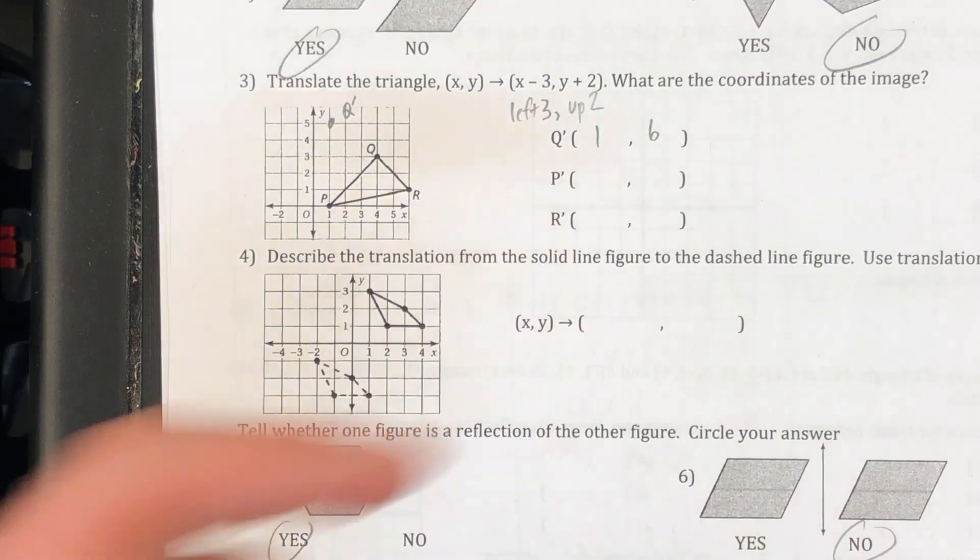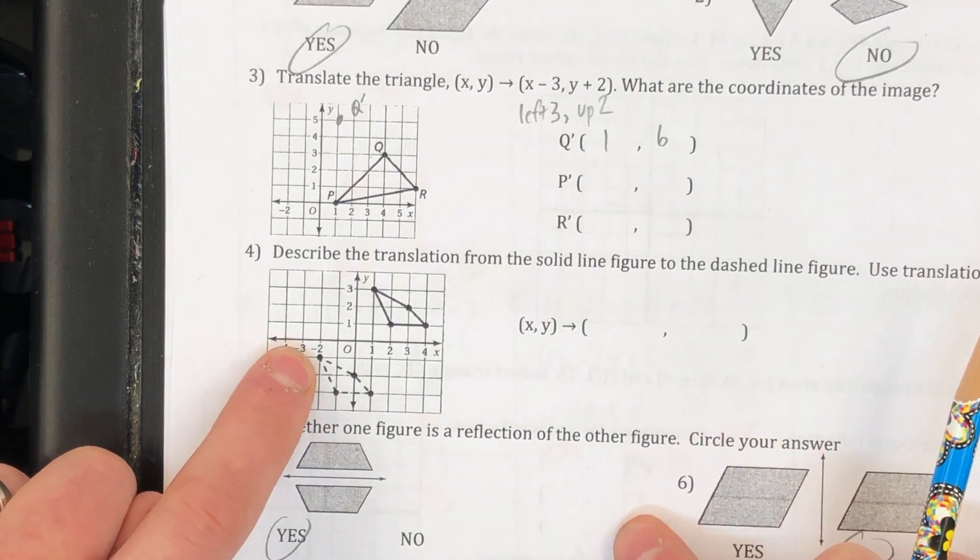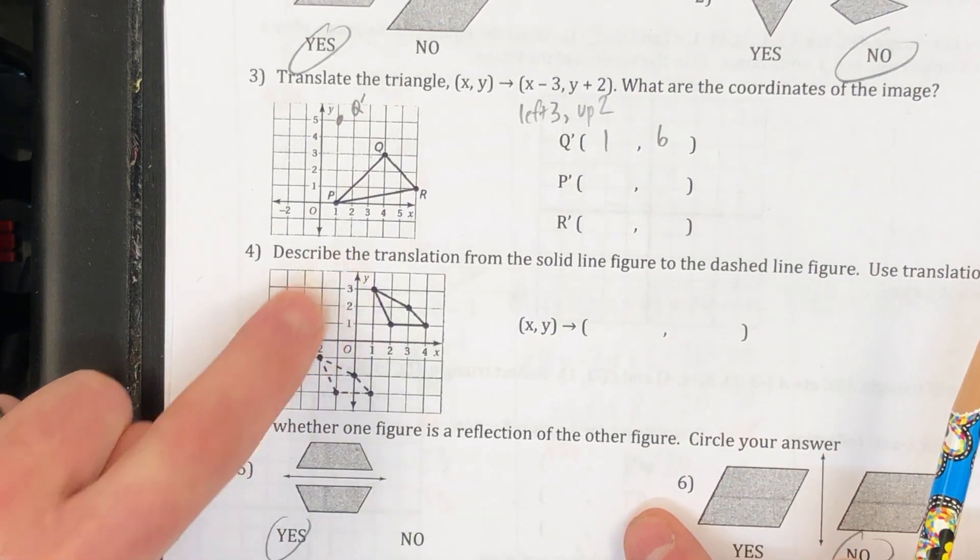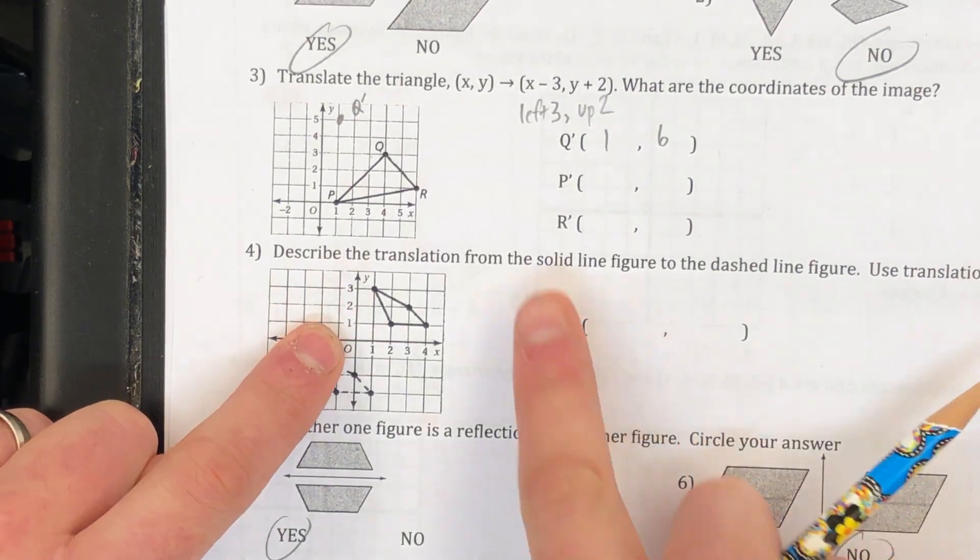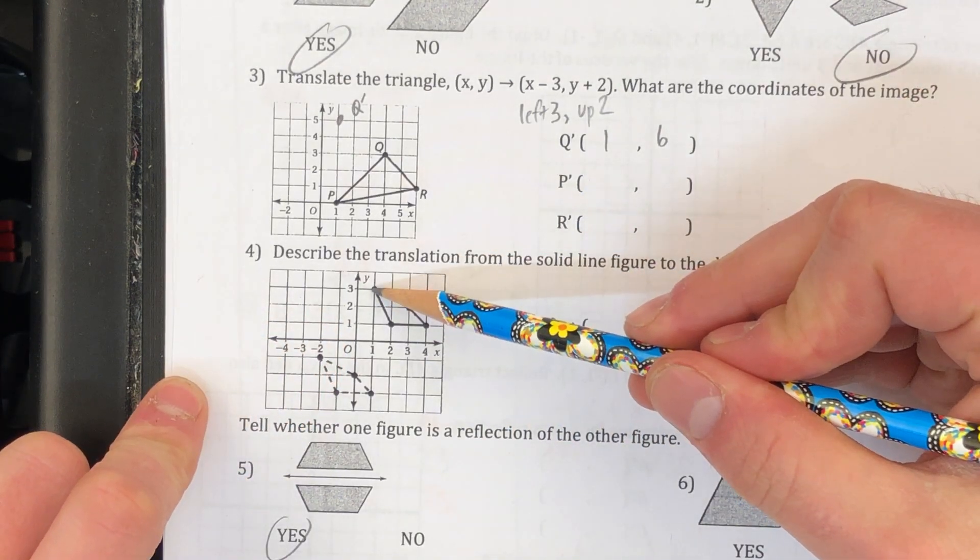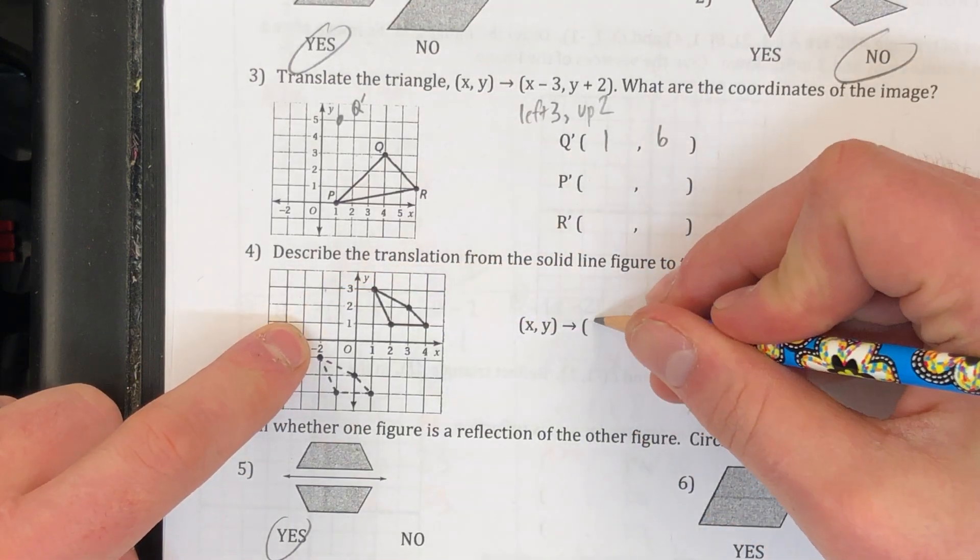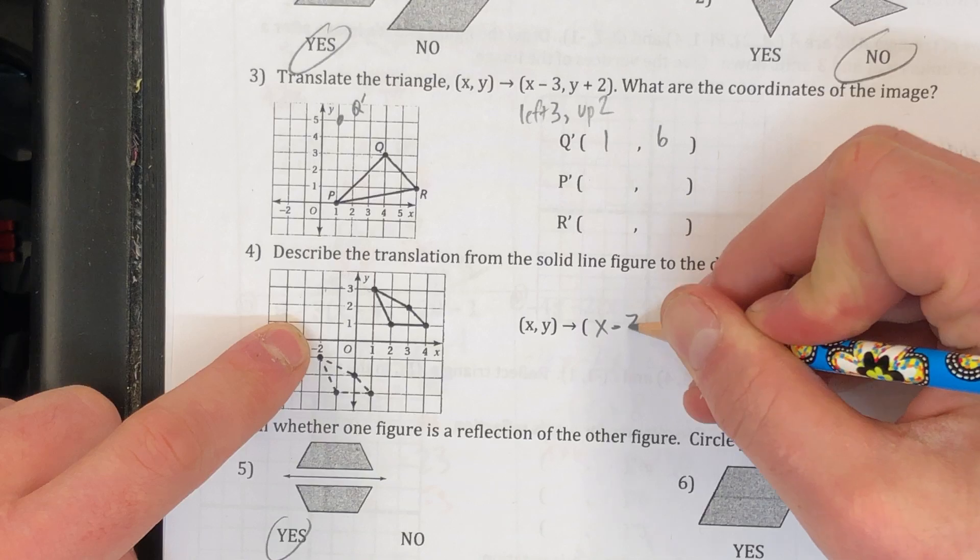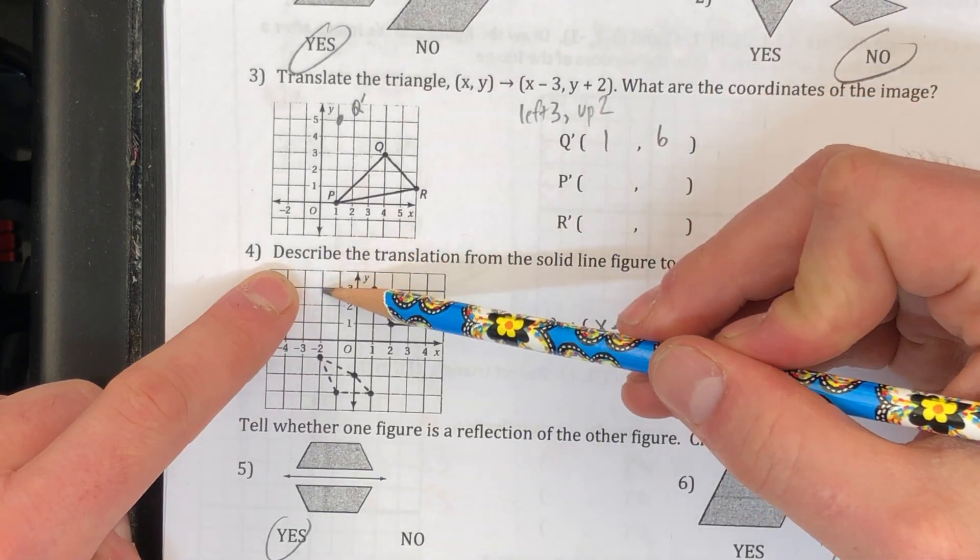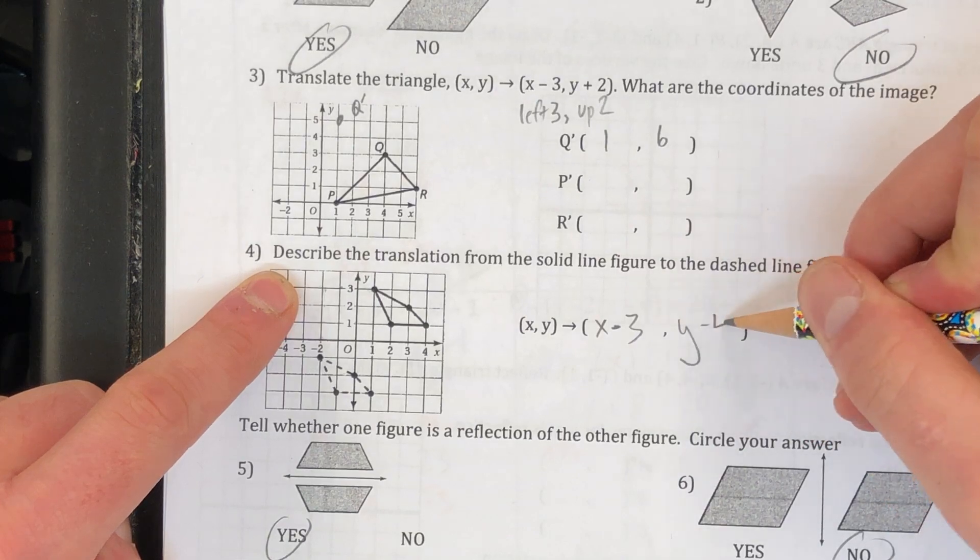All right, 4 is kind of the same thing, except for this time I'm giving you the notation. So let's look at some corresponding points. How about this top point here and this top point here? Now I want to go from the solid to the dash. So from the solid I went left 1, 2, 3 units. So I went x minus 3. And then on the y-axis I went down 1, 2, 3, 4. So that's y minus 4.